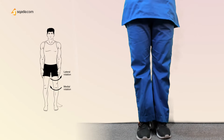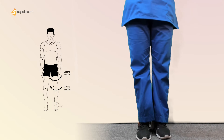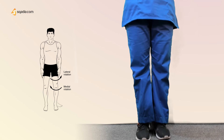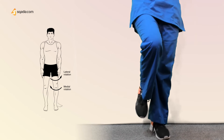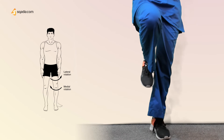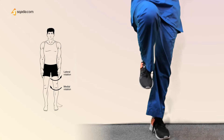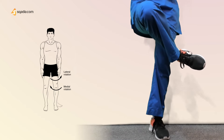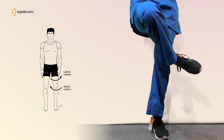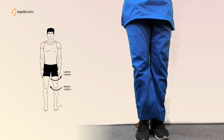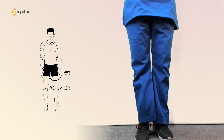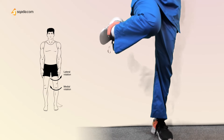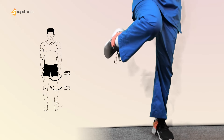Another movement at the knee joint is internal rotation, also called medial rotation, and the other is lateral rotation or external rotation. To perform these, you first flex the knee to about 90 degrees, then internally rotate — that is the medial rotation. For lateral rotation, again flex first, then externally rotate outward.